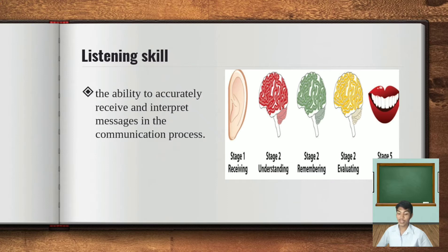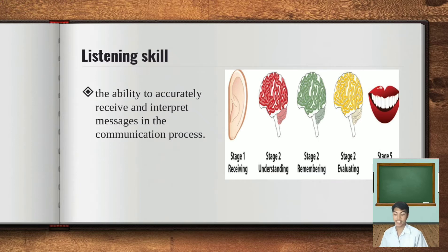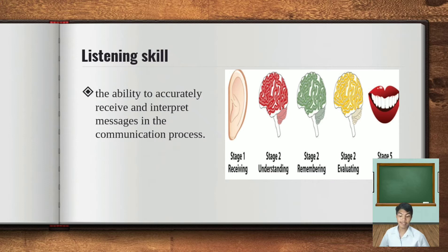Listening skill is the ability to accurately receive and interpret messages in the communication process. At the right side of your screen, it shows the process of how listening skill works. There are five stages: stage one is receiving, stage two is understanding, stage three is remembering, stage four is evaluating, and stage five is feedback.